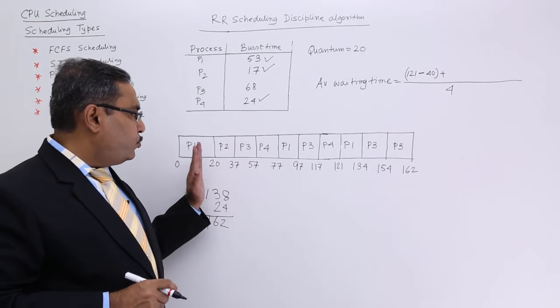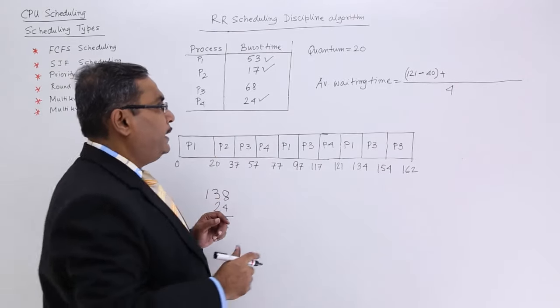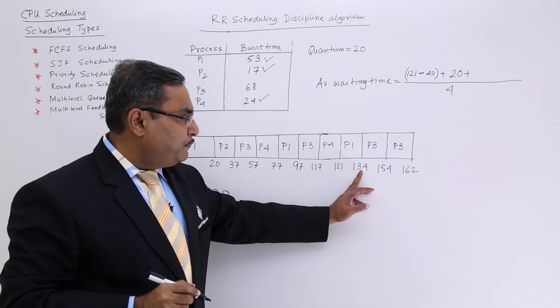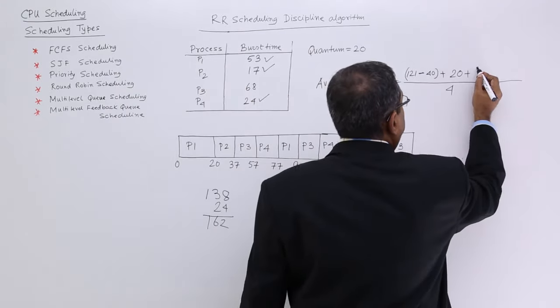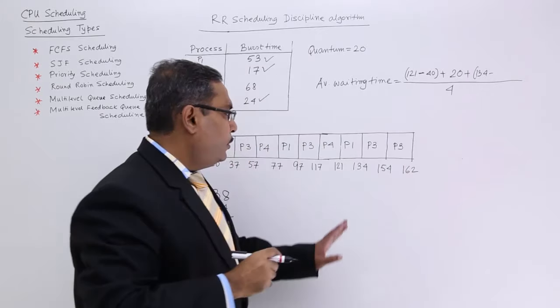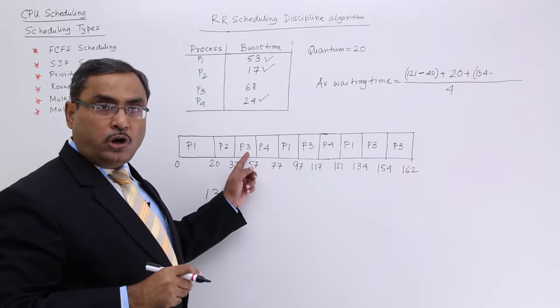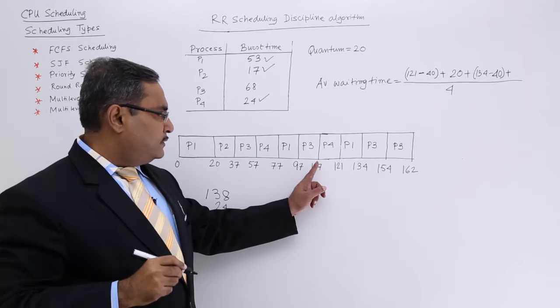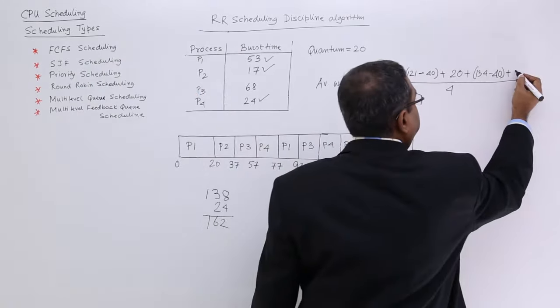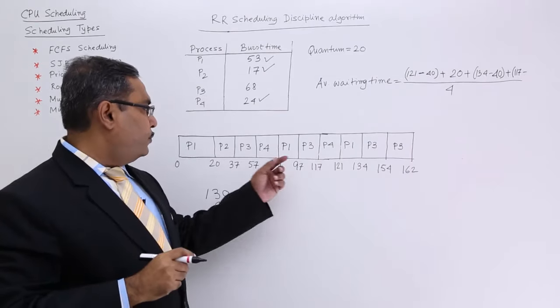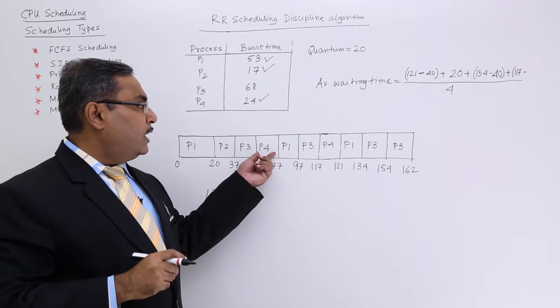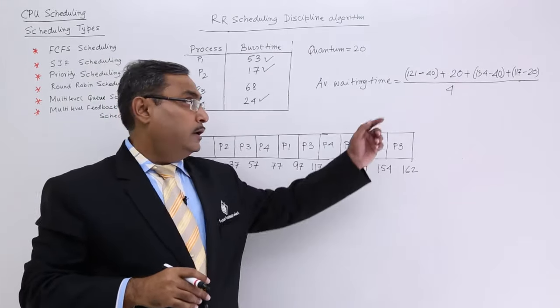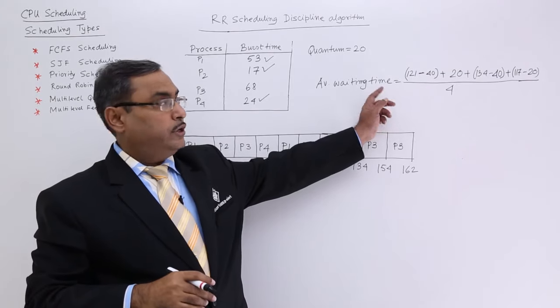Now I shall go for P3. P3 after 134 units of time, P3 need not to wait. So 134. And prior to this 134, P3 got first time and second time, two slots. So minus 40. For P4, after 117, P4 need not to wait. So 117. Now see, for this P4, it got time slots once prior to that. So minus 20. So whatever the value you are getting after doing this algebraic formula, after calculating from this equation, that is the average waiting time.